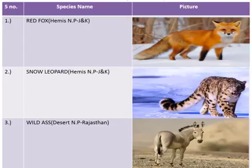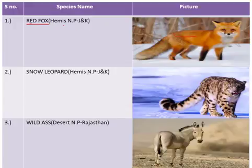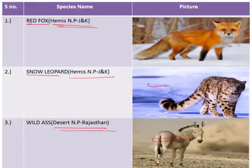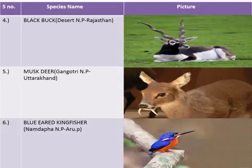Here are some key species along with the national parks they belong to. The red fox belongs to Hemis National Park. The snow leopard also belongs to Hemis National Park — both in the state of Jammu and Kashmir. The wild ass belongs to the Desert National Park in Rajasthan. The black buck also belongs to the Desert National Park in Rajasthan.